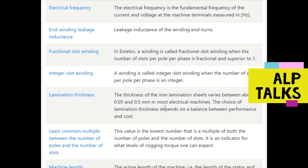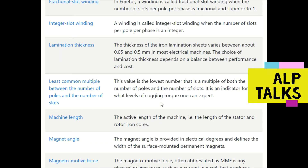The LCM concept refers to the least common multiple between the number of poles and the number of slots. This value is the lowest number that is a multiple of both, and it is an indicator of the level of cogging torque we can expect in the machine.